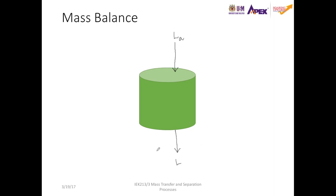There's also the gas flow that carries the gas that will be absorbed by the solvent, which we'll call V. When it leaves the absorption column at the top, it would have less of the gas because it gets absorbed by the solvent, and we call this outgoing gas flow Va. So a general mass balance equation for this unit would simply be La plus V equals to the outgoing flows L plus Va.